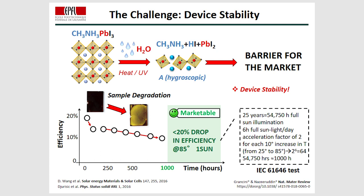However, this material has a very important challenge, which is device stability. The perovskite is sensitive to water — if exposed to humidity, it tends to hydrolyze. Also, the organic cations such as methyl ammonium and formamidinium, together with the lead halide, are highly hygroscopic. This degradation can be dramatically accelerated by heat, UV, or electric field exposure. This is an important issue for commercializing this material.